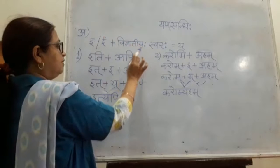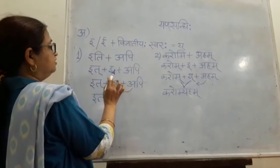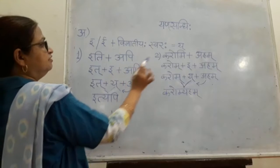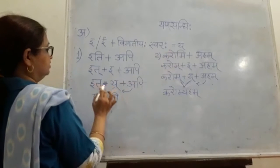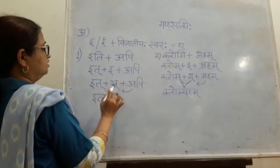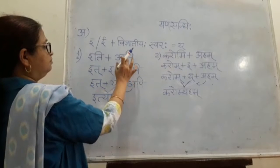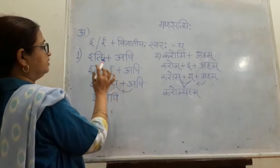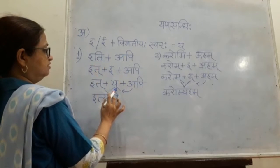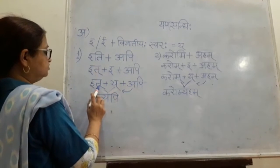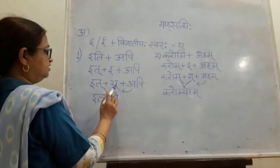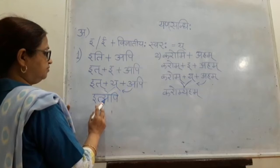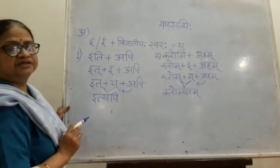We have api, so we will replace this i with y. Y halanta will come here plus api. There will be no change in this part. Only we will replace i with y halanta. Now ta is halanta, ya is halanta — they will combine and this a will join them. The answer will be ityapi.